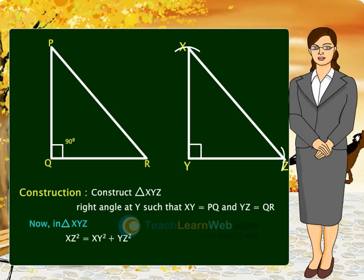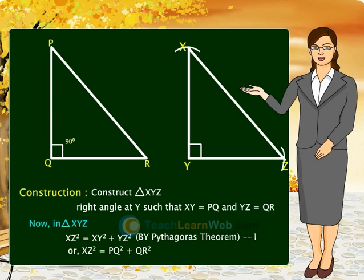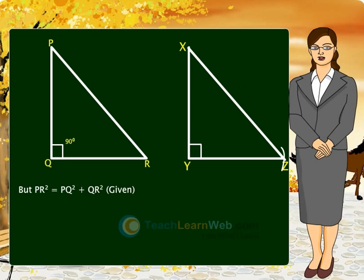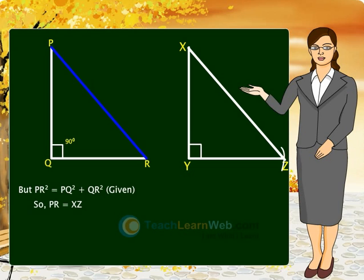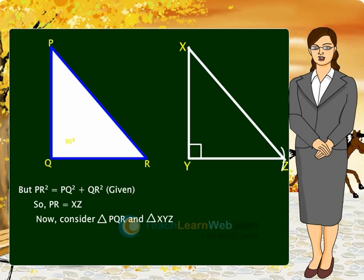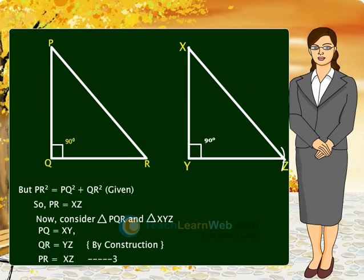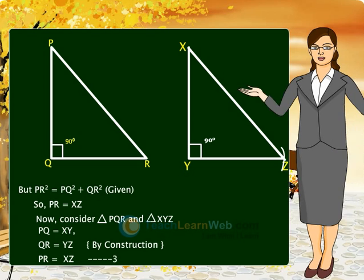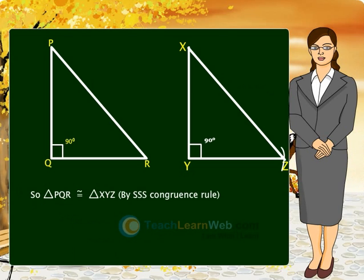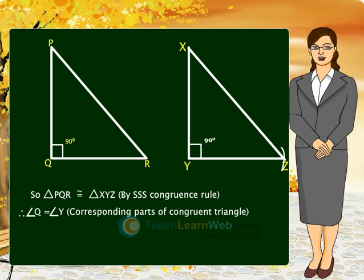Converse of Pythagoras Theorem: PR² equals PQ² plus QR² is given. Now consider triangle PQR and triangle XYZ where PQ equals XY, QR equals YZ by construction, and PR equals XZ. So triangle PQR is congruent to triangle XYZ by SSS congruence rule. Therefore angle Q equals angle Y, as corresponding parts of congruent triangles. But angle Y equals 90 degrees, so angle Q equals 90 degrees.